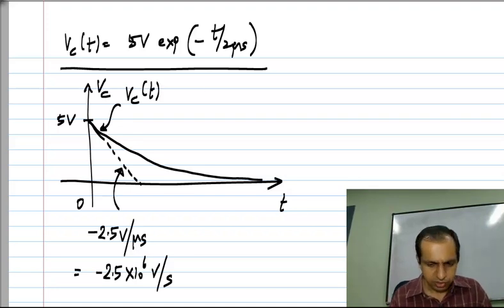So, one point of interest is if you draw a tangent at t equal to zero, where does it meet the x axis? That is the zero volt line. This is where the voltage is zero volts. So, this is a tangent and we know that the slope is minus two point five volts per microseconds. So, if you calculate this time it will be two microseconds and it is exactly the same as tau.